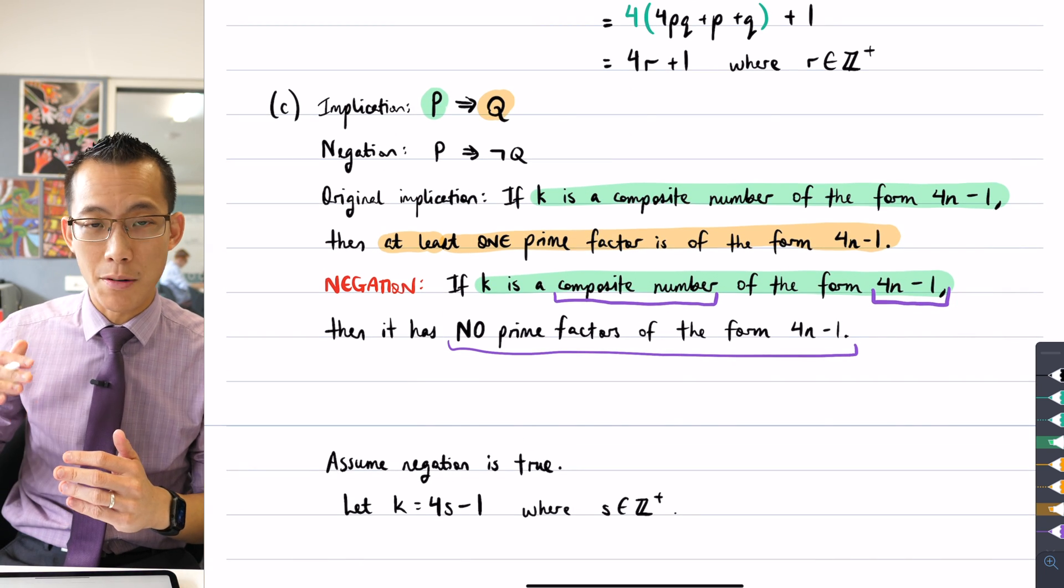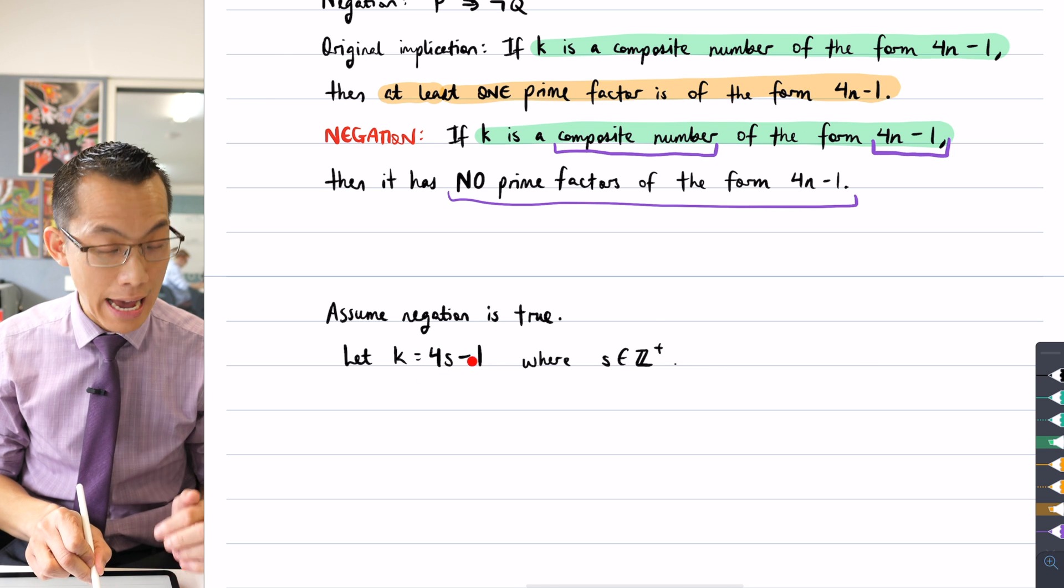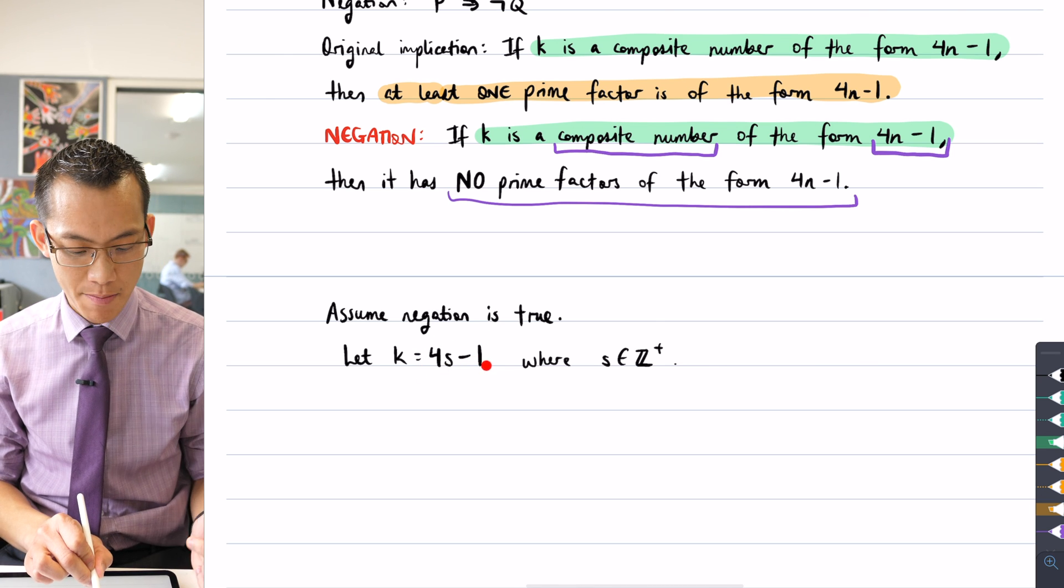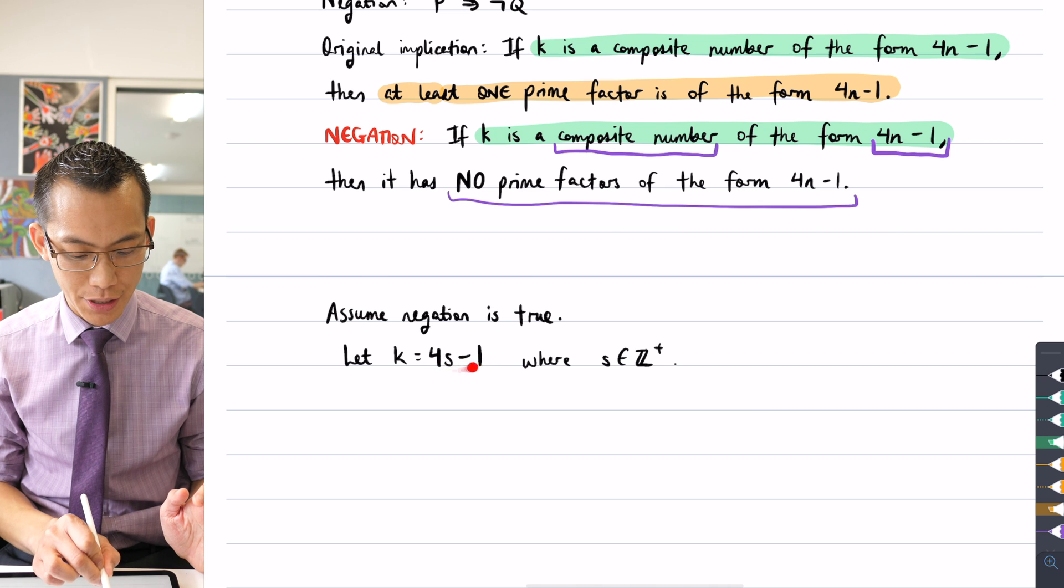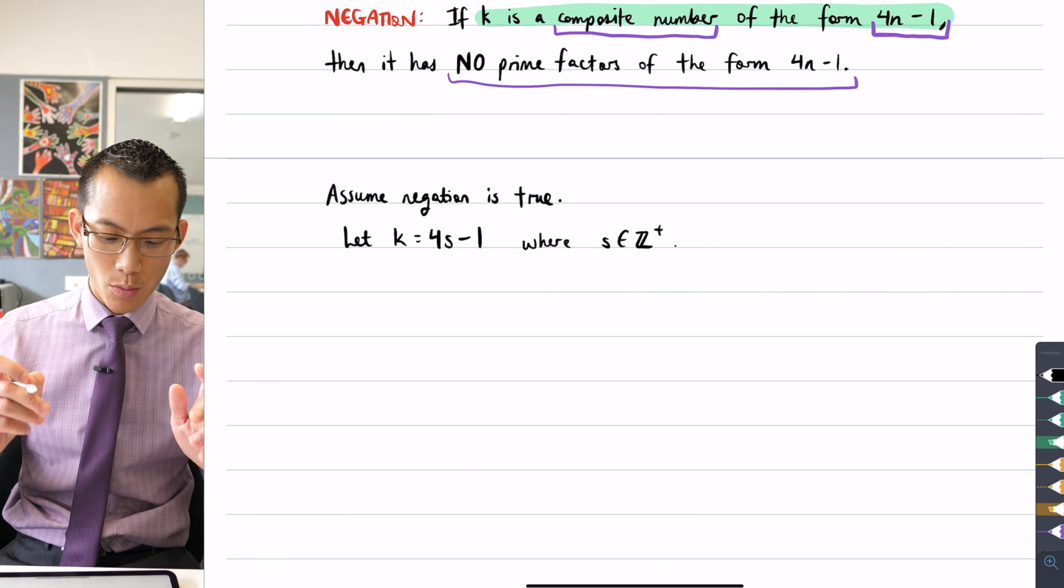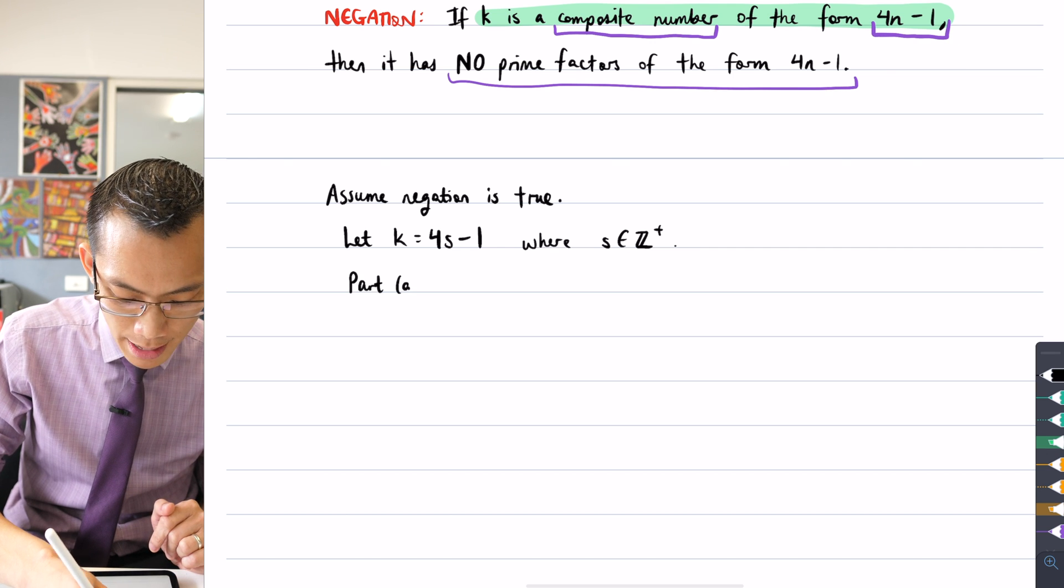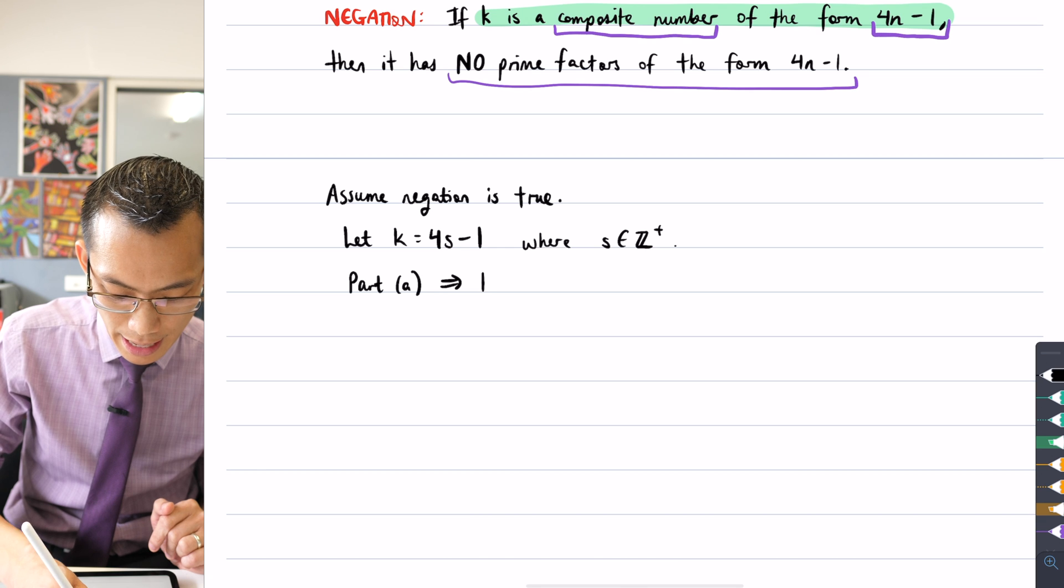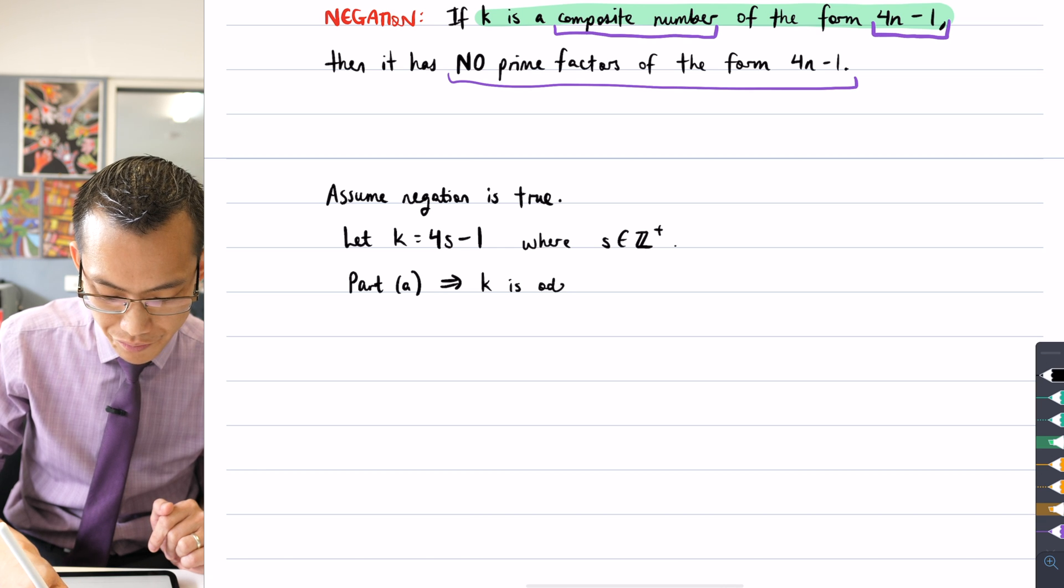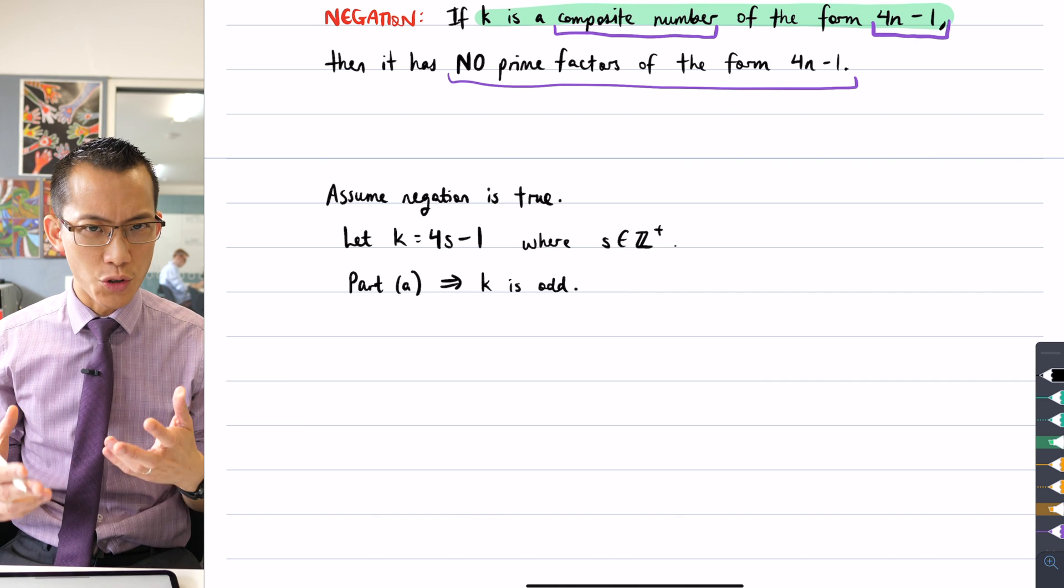Now, because I'm writing it in this form, if you think about what I've established in part A and B, I know that because I'm in this form, I have to be an odd number. All odd numbers are captured within these two sequences that I had before. So I can say part A implies that k is odd.